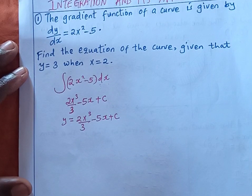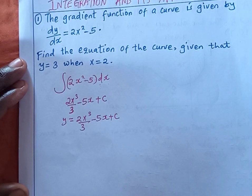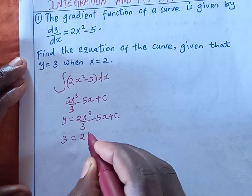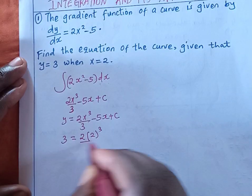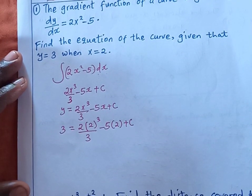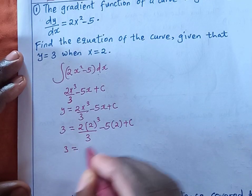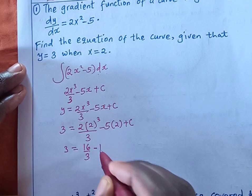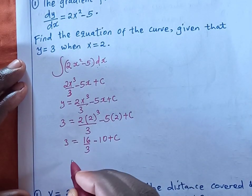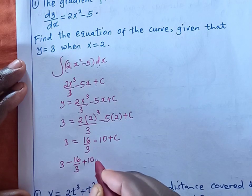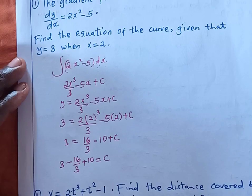We have already been told that when y is 3, x is 2. So where we see y, we replace it with 3, and where we see x, we put 2. So our equation becomes: 3 equals 2 times 2 raised to power 3, divided by 3, minus 5 times 2, plus c. The aim here is to work out the value of c. So: 3 equals 16 over 3, minus 10, plus c. Rearranging, c equals 3 minus 16 over 3, plus 10.